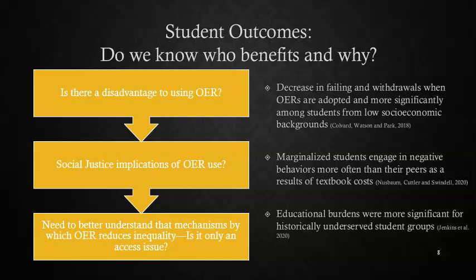Recently, research has begun to look at who benefits most from OER adoption with a social justice emphasis. Three recent studies demonstrate that underserved, marginalized, and lower socioeconomic groups have more significant gains when OERs are implemented in the classroom. What I would argue, though, is that we don't have enough of this type of research. All three articles argue that more research is needed on the social justice implications of OER use, and furthermore that research needs to better understand the mechanisms by which OER reduces inequality — is it only an access issue, or are there other mechanisms at play?